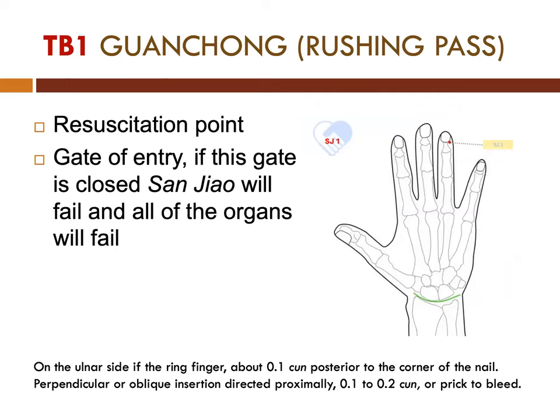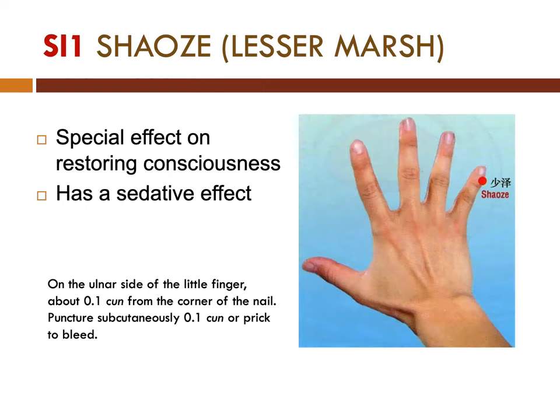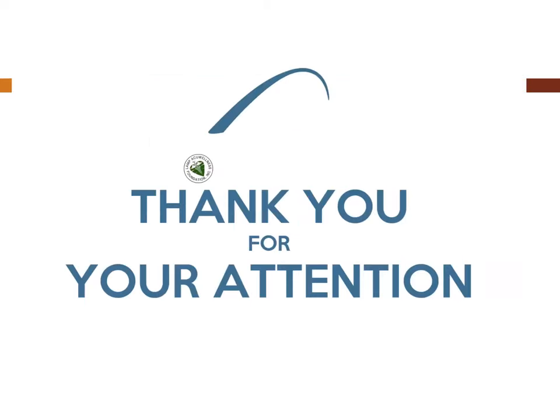Next point is Triple Burner-1. It is a resuscitation point and is also the gate of entry — if this gate is closed, the sanjiao or triple burner will fail and all of the organs will fail. It is located on the ulnar side of the ring finger, about 0.1 cun posterior to the corner of the nail. Needling is done perpendicularly or obliquely, 0.1 to 0.2 cun, or prick to bleed. Next point is SI-1. It has special effect on restoring consciousness and also has a sedative effect. It is on the ulnar side of the little finger, about 0.1 cun from the corner of the nail. Puncture subcutaneously 0.1 cun, or prick to bleed. That's all for clearing.